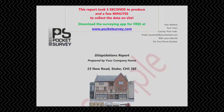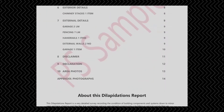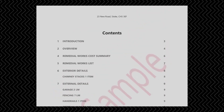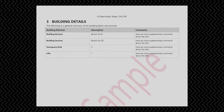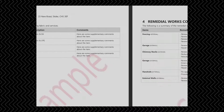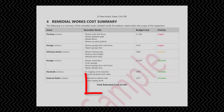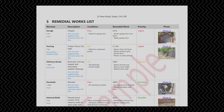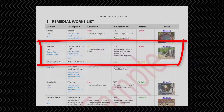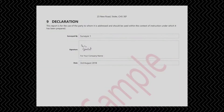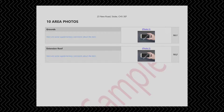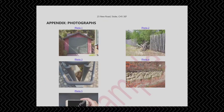The report is branded with your company logo and company details. There's an automatically generated table of contents showing all the sections in the report. There's an introduction page, an overview page, and a section showing the main building details captured on site. There's a summary of the total cost of all the work needed. Then there's a detailed list, color coded, with all the cost items and hyperlinked photographs. A disclaimer section is an option, and a signed declaration page. Finally at the end of the document there's a gallery of all the photographs taken on site.